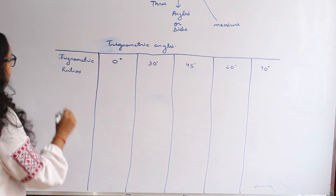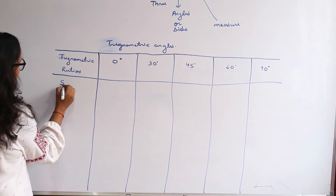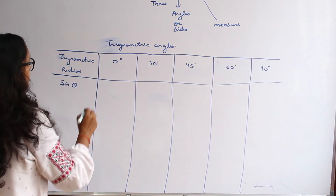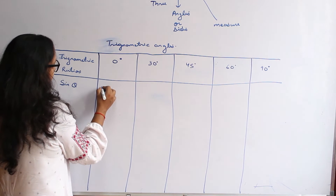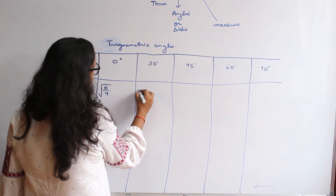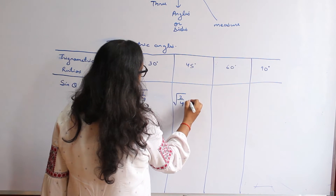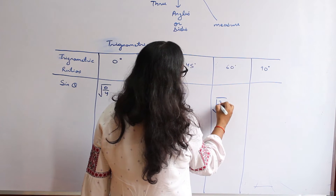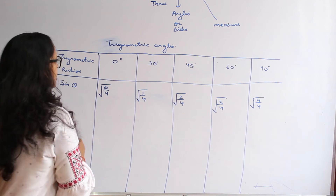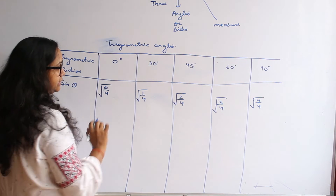The first trigonometric ratio is sin theta. To memorize its values, we write: square root of 0 over 4, square root of 1 over 4, square root of 2 over 4, square root of 3 over 4, and square root of 4 over 4. The denominators are all 4 and the numerators increase — making it easy to memorize.